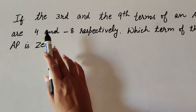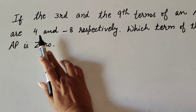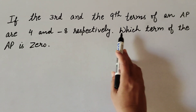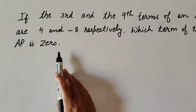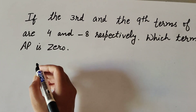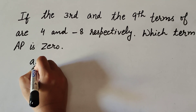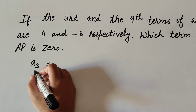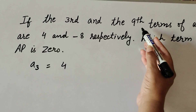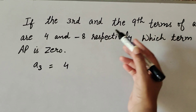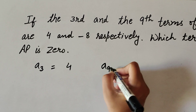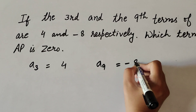In this question, the given information is: the 3rd term is 4, so a3 equals 4. The 9th term is minus 8, so we write a9 equals minus 8.